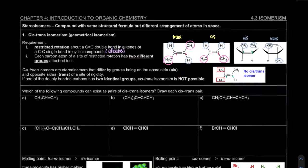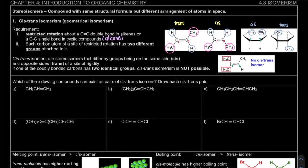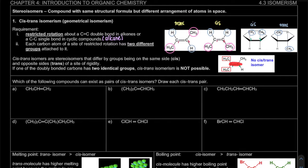To summarize: if one of the doubly bonded carbons has two identical groups, cis-trans isomerism is not possible. When checking your double bond, make sure each carbon is attached to two different groups.